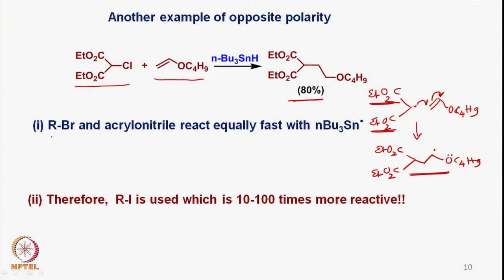It is also found that the C–Br bond of RBr and acrylonitrile react equally fast with the tributyltin radical. However, RI reacts 10 to 100 times faster than RBr, so the use of RI is often explored. There is a caveat: some iodo compounds are not as stable as RBr at the high temperatures used during reaction, so a compromise must be found. The use of dilution avoids reduction of the radical at the first stage, and therefore C–C bond formation occurs with the reaction subsequently stopping.